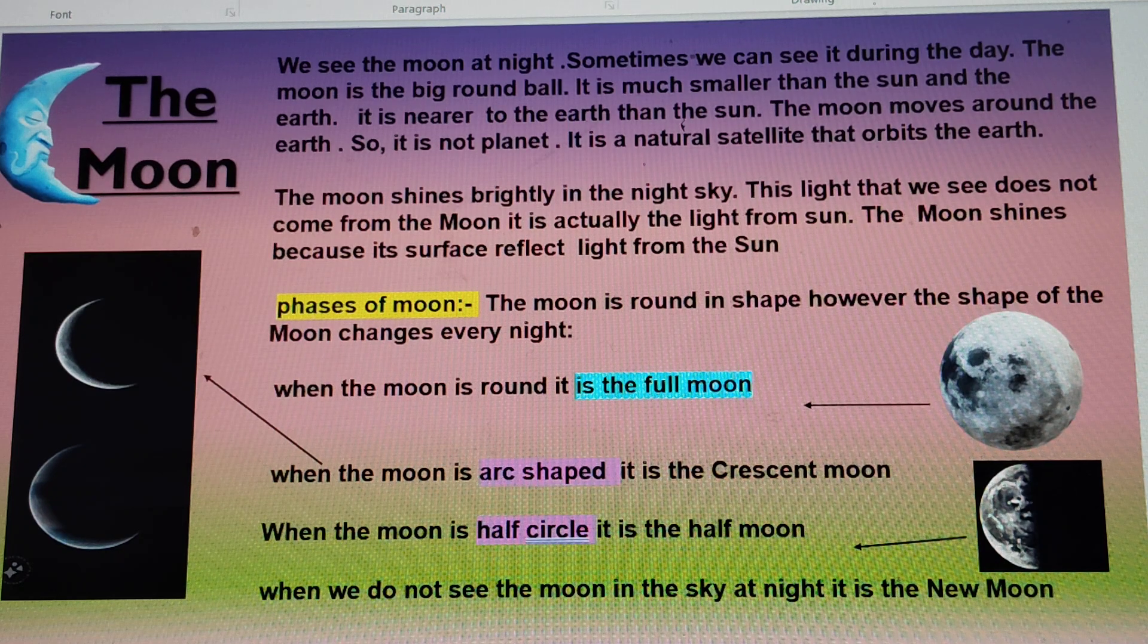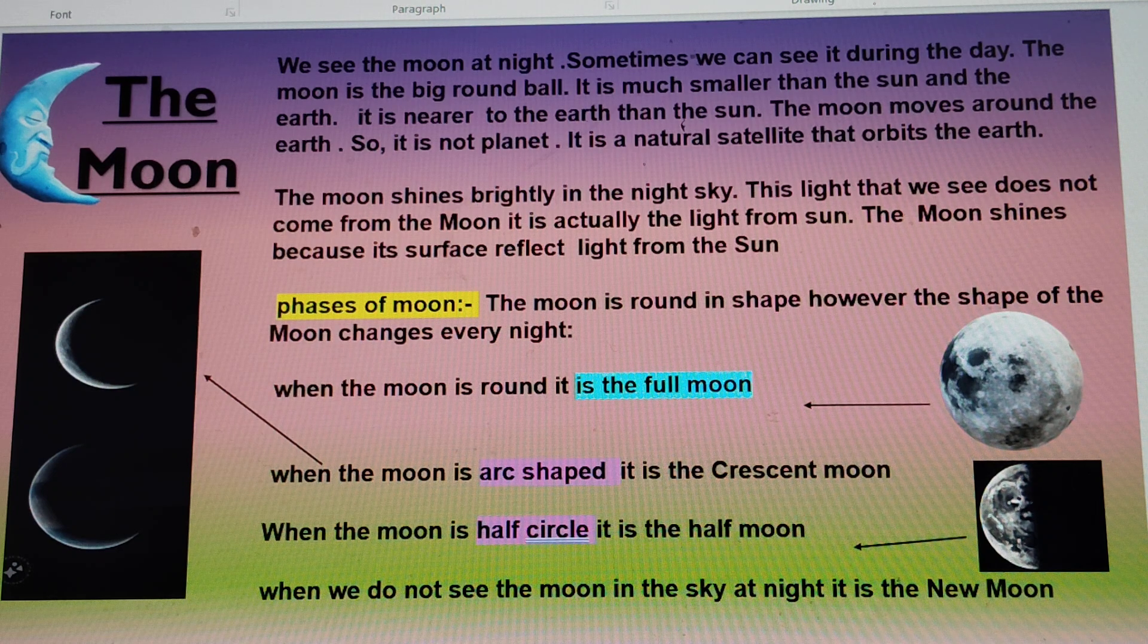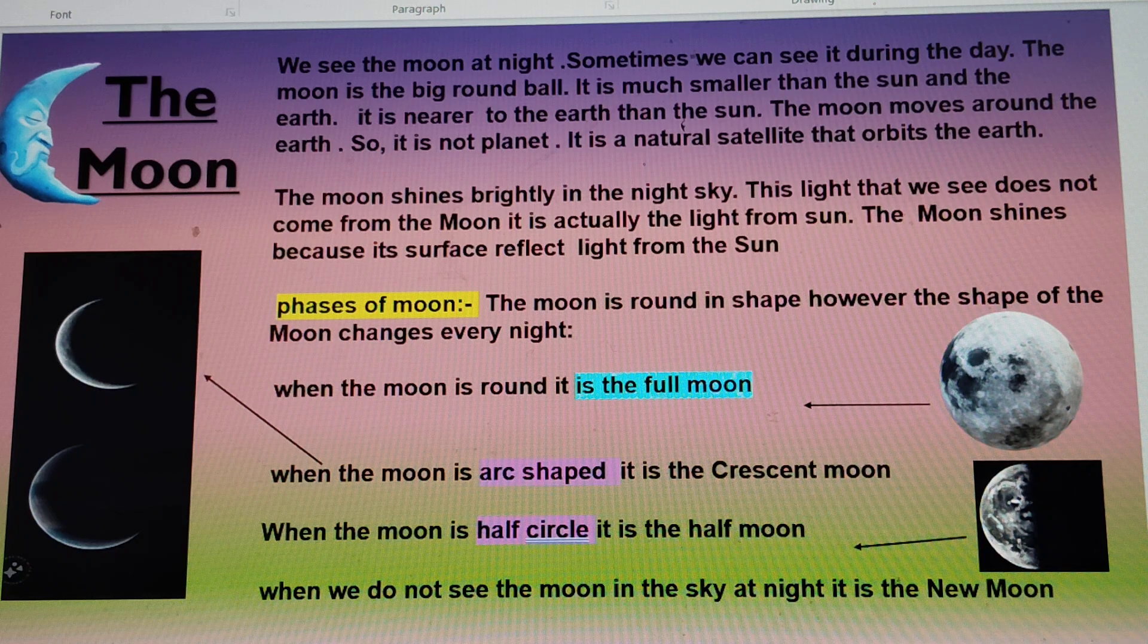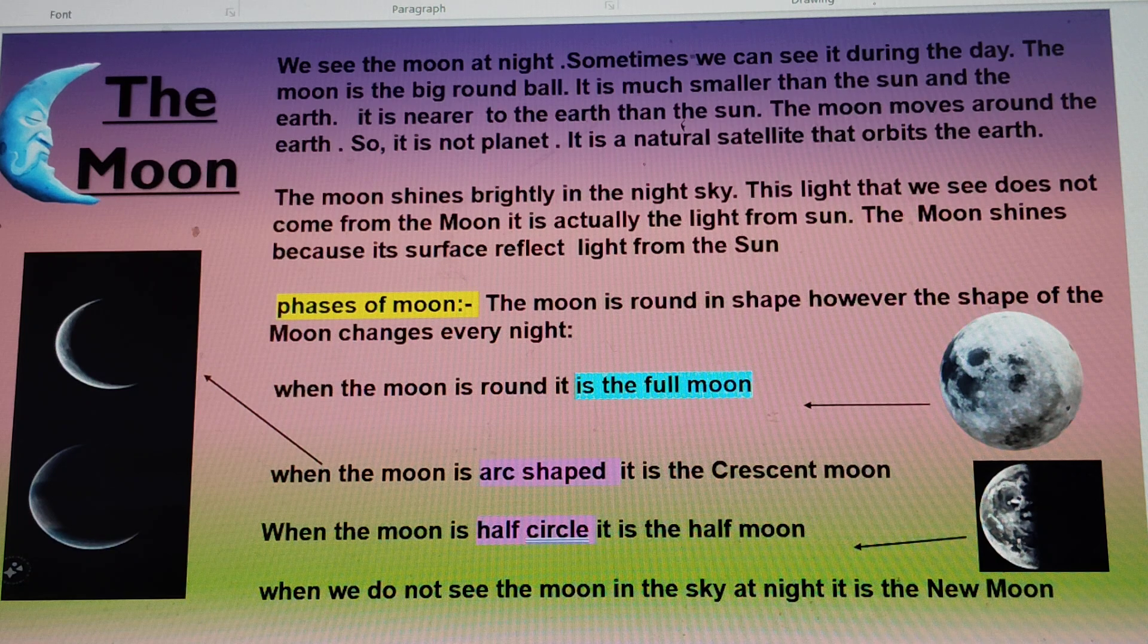When the moon is round, it is called full moon. When the moon is arc shaped, it is called crescent moon. And when the moon is half circle, it is called half moon. When we do not see moon in the sky, it is called new moon.